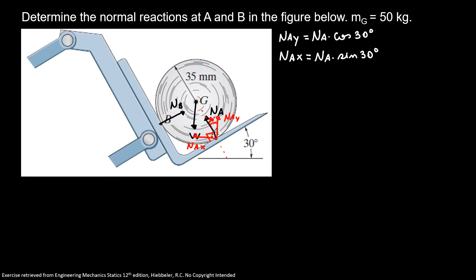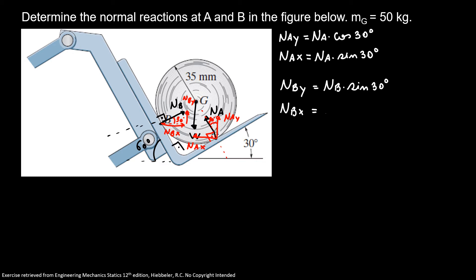For our B: here is 90 degrees, and here is 90 degrees, so it makes this plane 60 degrees. With trigonometry, we know that the angle here is 30 degrees. We have NBY and NBX, so NBY is equal to NB times sine of 30 degrees, and NBX is equal to NB times cosine of 30 degrees.